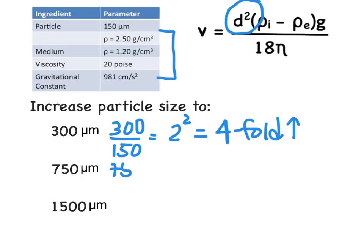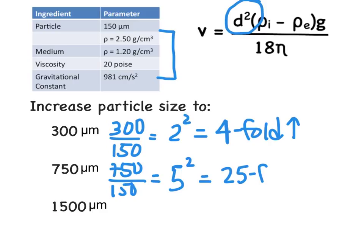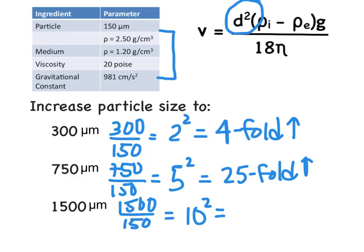Similarly, if we go to a 750 micron particle, that is a five-fold increase in particle size, so squaring that term we would see a 25-fold increase in the rate of particle settling. And for a 1,500 micron diameter particle, that is a ten-fold increase in particle diameter, so squaring that we expect a hundred-fold increase in the rate of settling.